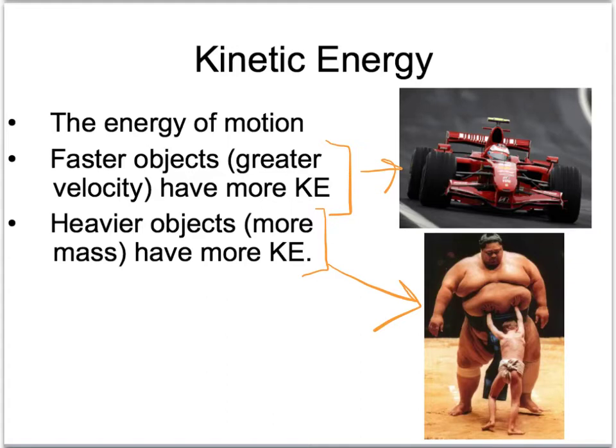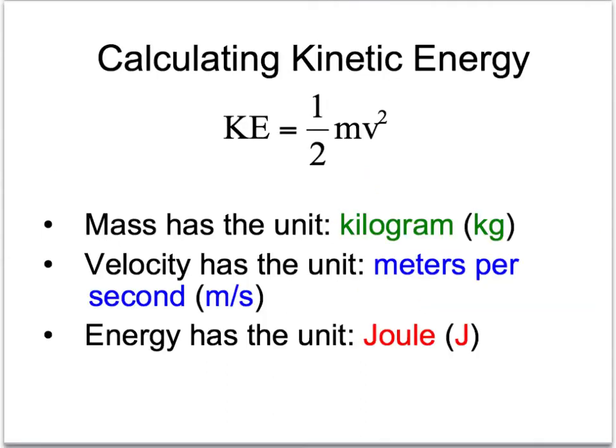You should write down those key points. Pause the slide if you need to. And then I'm going to move on to the equation for kinetic energy. The equation for calculating kinetic energy is KE equals 1/2 mass times velocity squared. Mass is measured in kilograms and its variable is m. Velocity is measured in meters per second and its variable is v. And notice that that velocity does get squared, and there's a 1/2 in the equation.